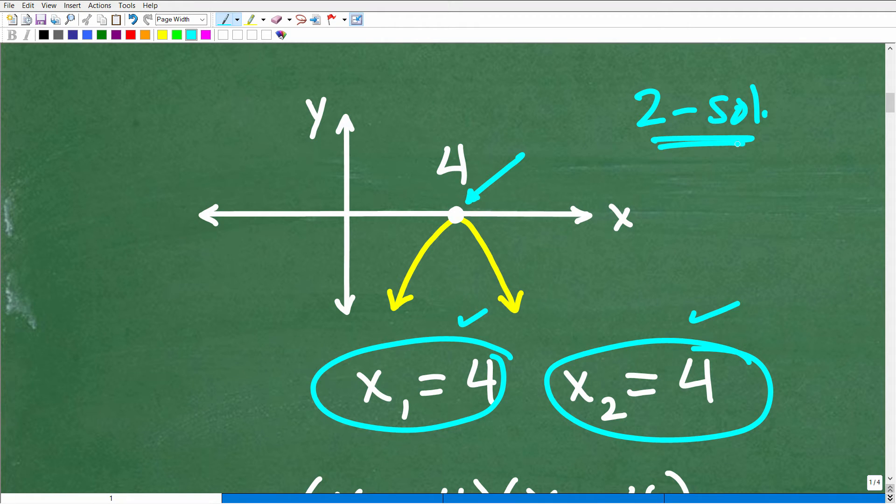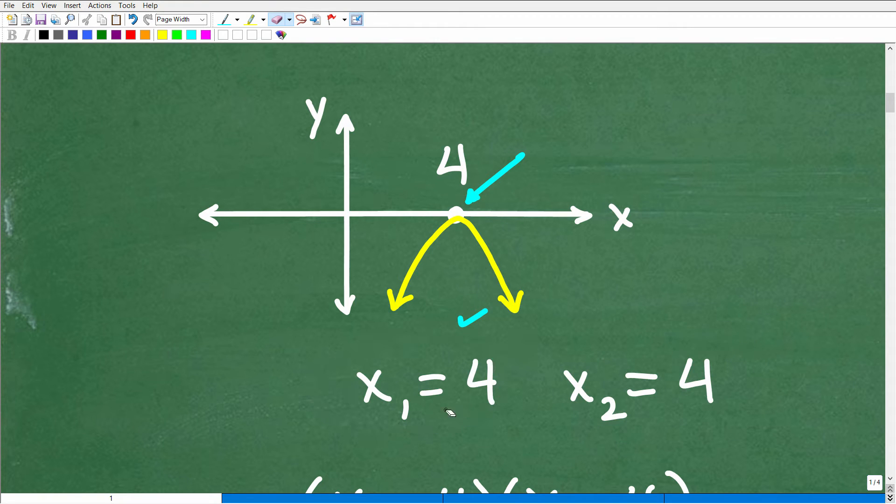And you're like, well, I don't see two unique, two different x points that the graph is crossing the x-axis. Well, this 4 right here constitutes two unique solutions. So one solution is at 4 and the other is at 4. And again, we would call this a double root. So you really need to know the different types of roots and even how to determine them using something called the discriminant, which is a part of the quadratic formula.